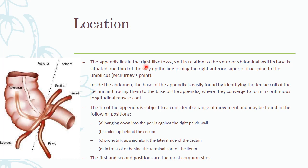The appendix is mainly located in the right iliac fossa. Its base is situated at around one third of the line joining the right anterior superior iliac spine to the umbilicus — this is McBurney's point. Inside the abdomen, the base of the appendix can be easily found by identifying the teniae coli of the cecum and tracing them back to the base of the appendix, where these teniae coli converge and form a continuous longitudinal muscle coat.